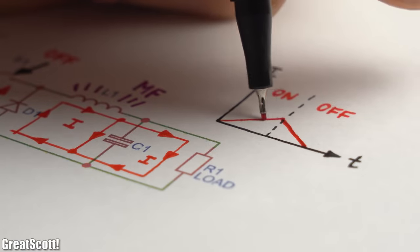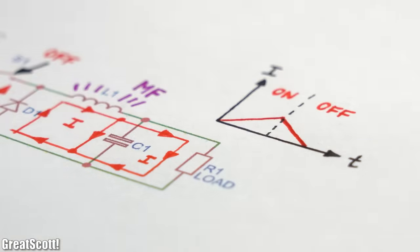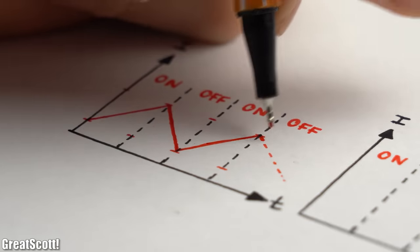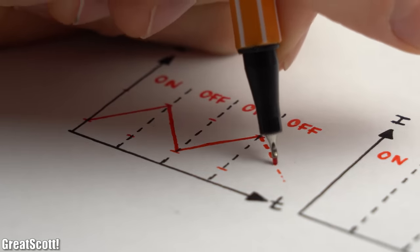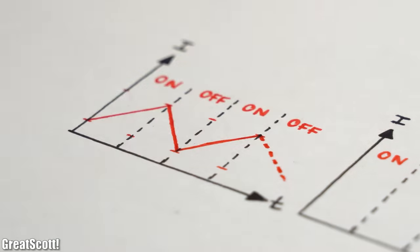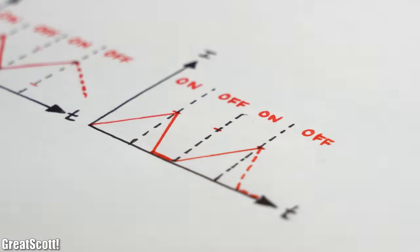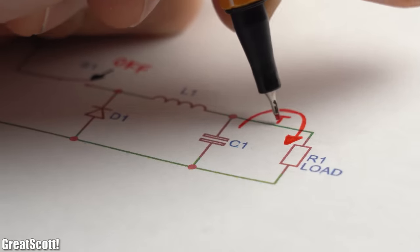But of course, the current is this time linearly decreasing, and depending on a couple of factors, the current can either stay above zero before the switch once again closes, or fall to zero before that, at which point the capacitor has to supply the load for a short time.